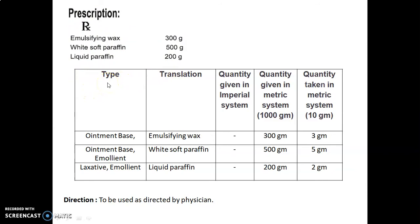Formula table shows type, translation, and quantities. Since we don't have Latin names, we move to quantity given in metric system for 1000 grams and quantity taken for 10 grams. Emulsifying wax used as ointment base: quantity given 300g, taken 3g.